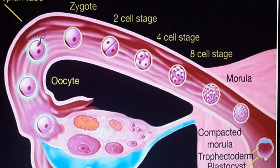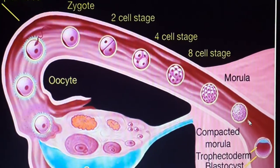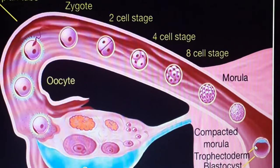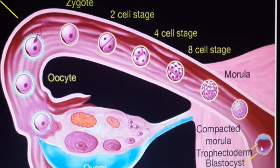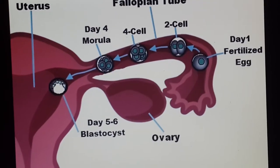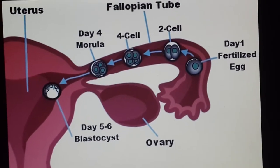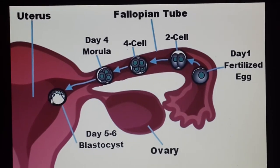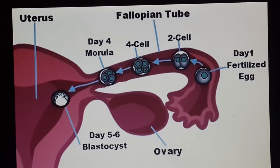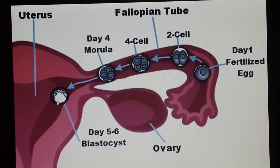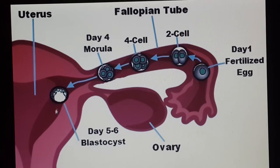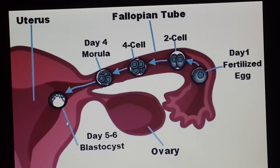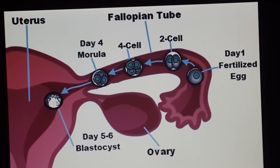And as the division continues and the morula enters the uterine cavity, a cavity will be formed inside the morula, creating a hollow ball of cells called the blastocyst. The blastocyst begins about five days after fertilization. Thereafter, there will be implantation of the blastocyst itself into the endometrium of the uterine wall, where it will undergo later developmental processes including gastrulation.